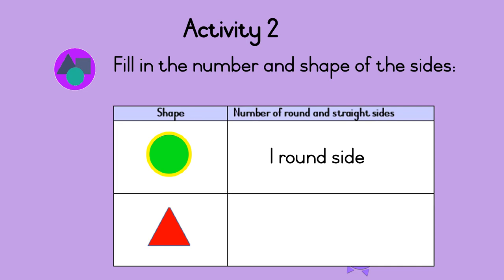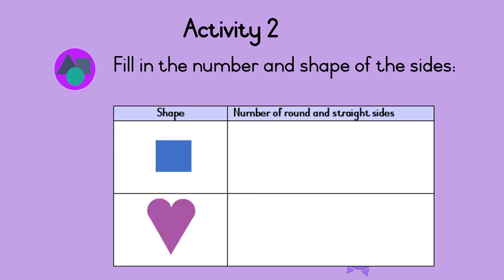Are you ready? The next shape is a triangle. It has three straight sides. Well done! What about the next one? Can you see that a square only has straight sides? So the square has four straight sides.